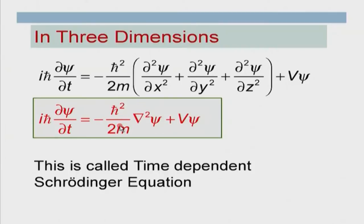In three dimensions this can be written using the del-squared operator. This equation is called the time-dependent Schrödinger equation — our basic equation representing the dynamics of a particle with observable wave character, and we expect everything to follow this equation. Most of the time, at least for the interesting cases in this course, the potential energy is not an explicit function of time — it just depends on position x, y, z but not on time.